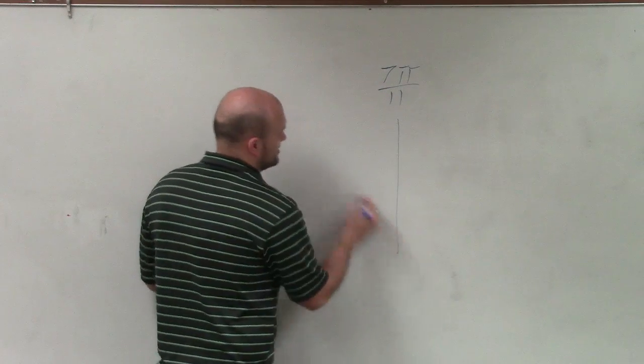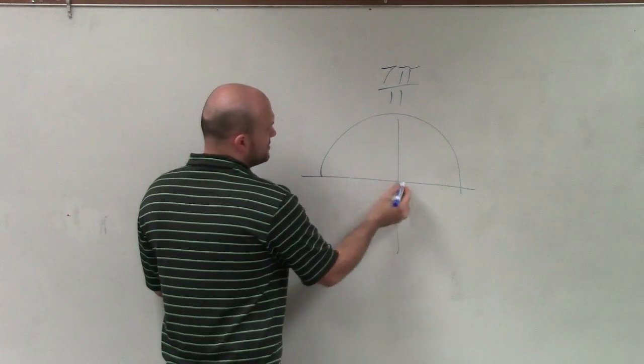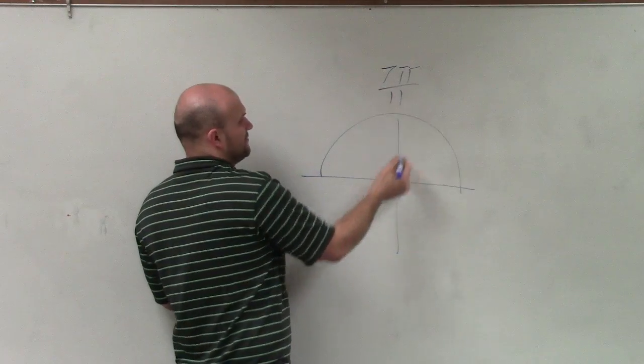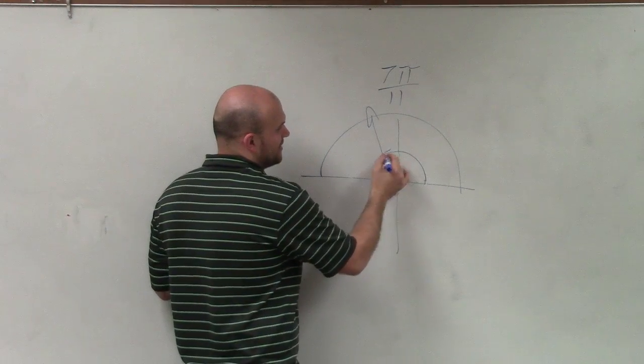Actually, well, let's just see. Okay, so anyway, 7 pi over 11, that's roughly going to be somewhere like here. All right, so we have an angle right there.